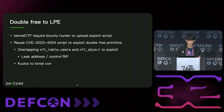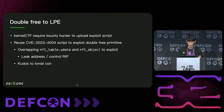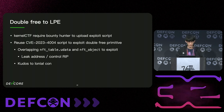After getting the double free primitive, we used the exploit method for CVE-2023-4004 to overlap the NFT table user data and NFT object to leak an address and control RIP. Due to time limits I won't expand on the details, but kudos to Lonnie and Khan, who discovered this technique and shared it on the Kernel CTF repository.